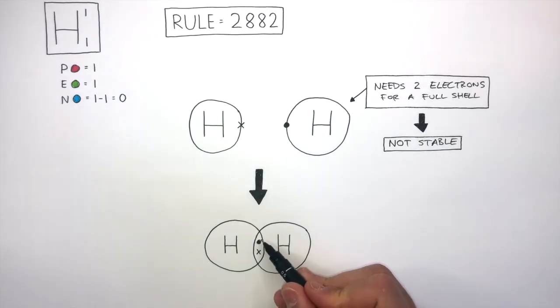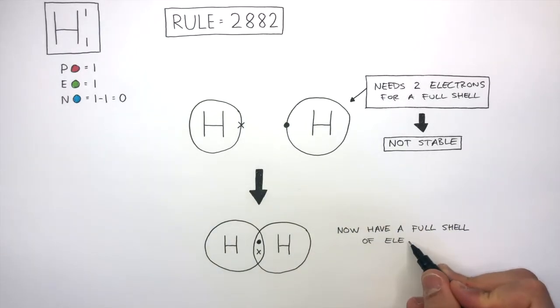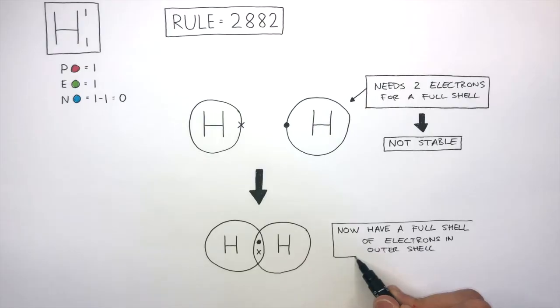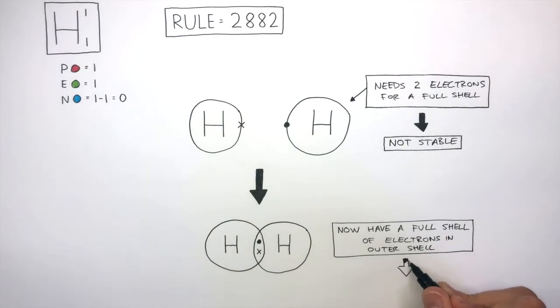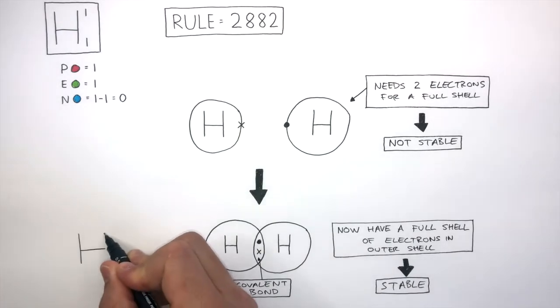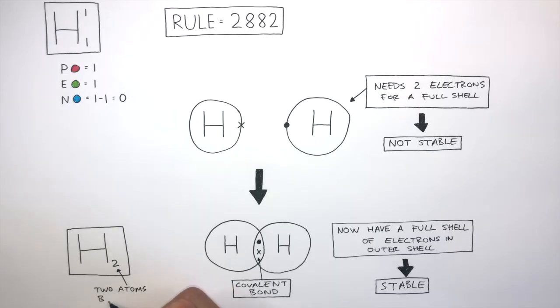The sharing of these two electrons is the covalent bond. They both now have a full shell of electrons in their outer shell as they have two electrons each in their outer shell due to them sharing their one electron. So the hydrogen atoms are now stable. This is the covalent bond which can be defined as a shared pair of electrons. The molecular formula is H2 and the two tells us there are two atoms bonded.